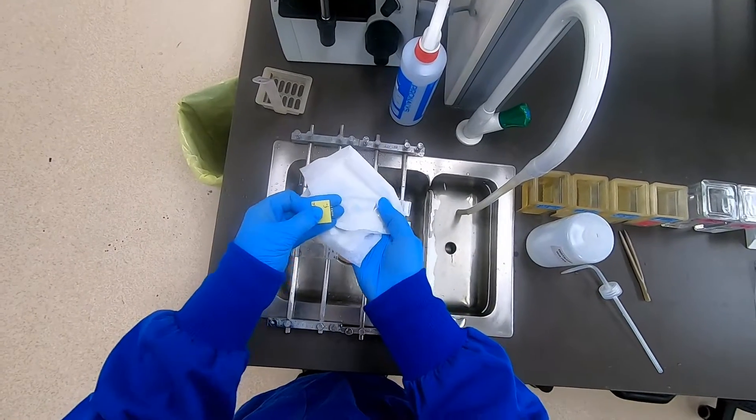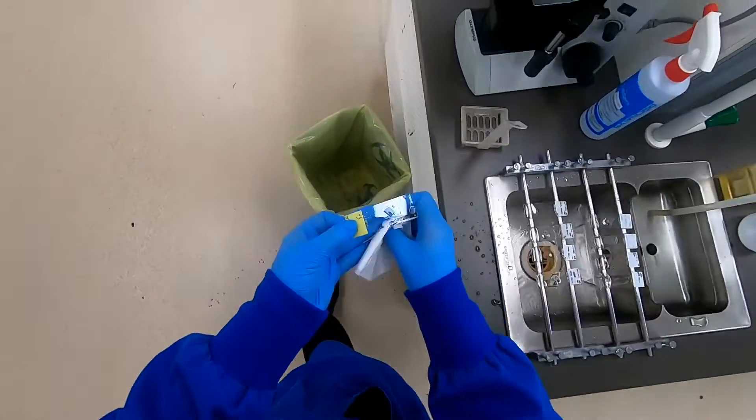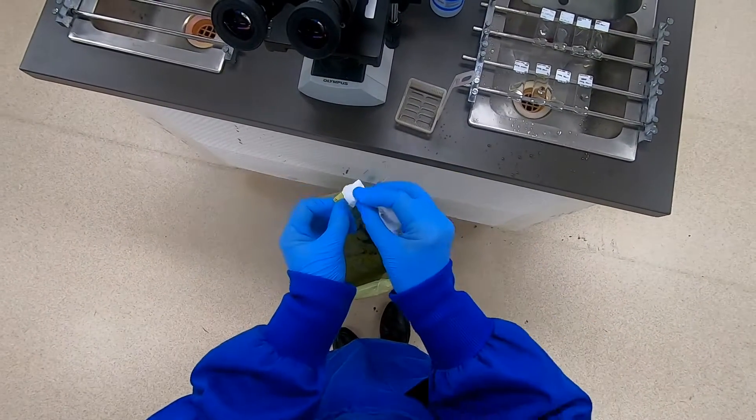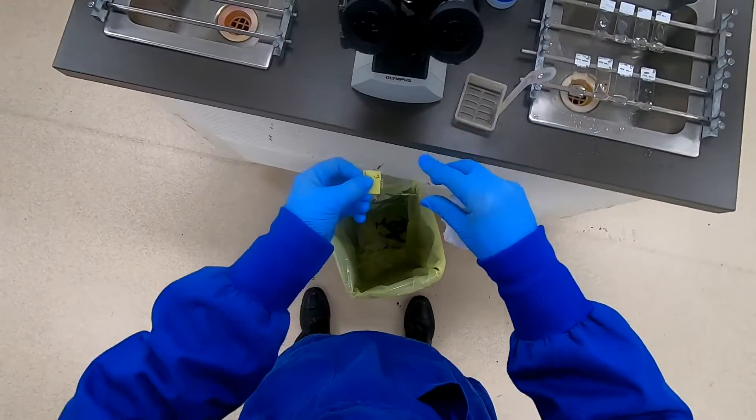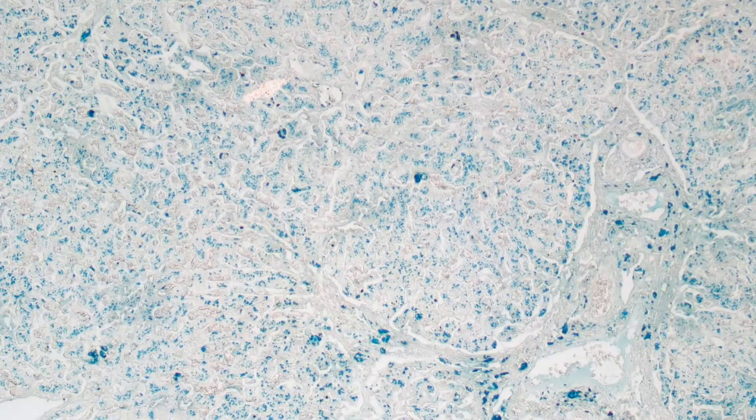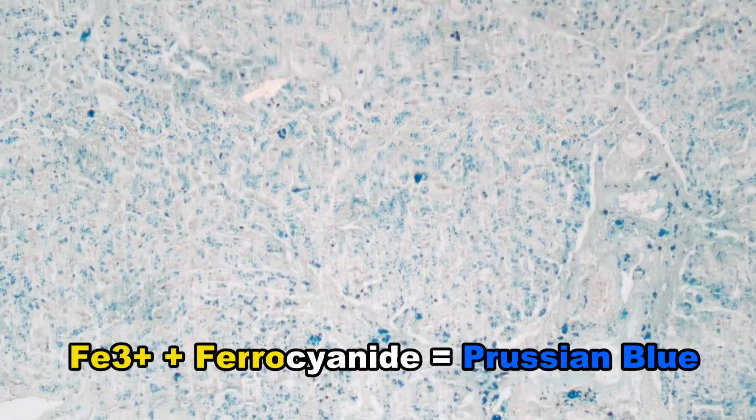This is a control section of liver which has quite pronounced hemosiderin present within it, so very high concentrations of Fe3+ ions. Looking over to the wet microscope...